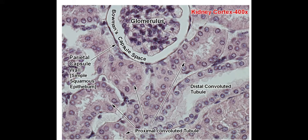The glomerulus is the network of capillaries, and the Bowman's capsule is the place into which the filtrate is going to go. The glomerulus is where the blood brings waste products, and these waste products go into the Bowman's capsule, which is part of the nephron. This occurs through the process of ultrafiltration.